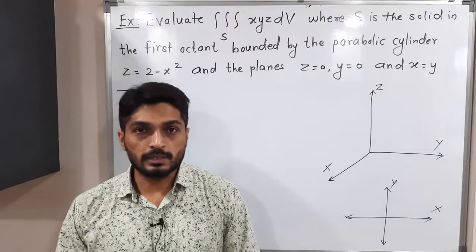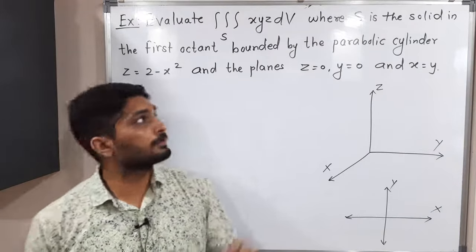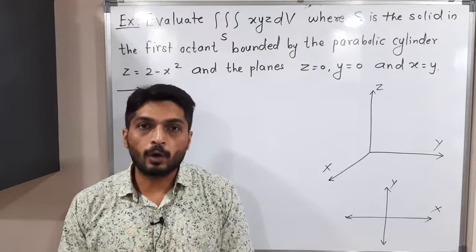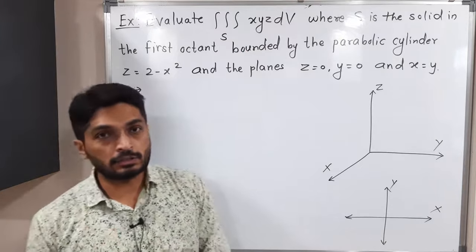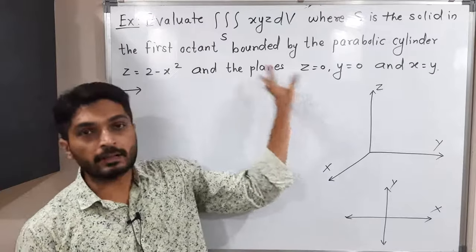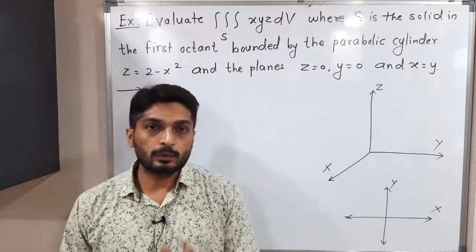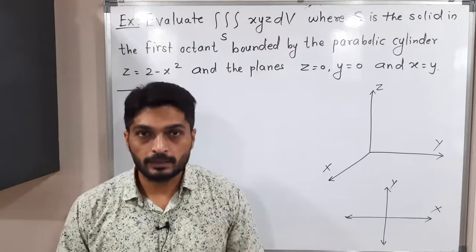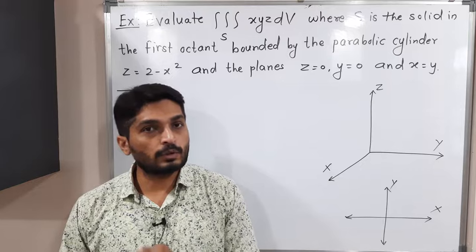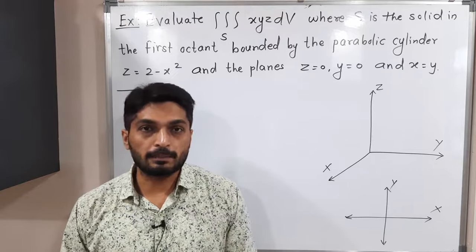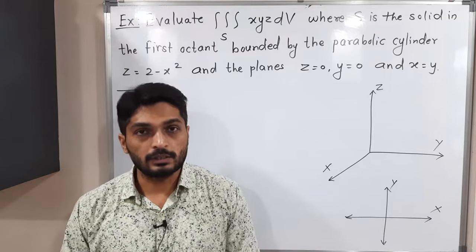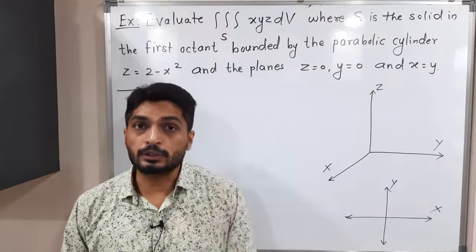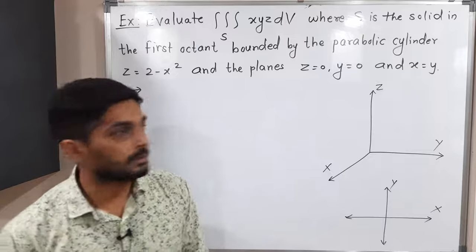Let us discuss this example. We have to find the value of this triple integral. The triple integral is defined on region S, described in a specific way. We have to find out that region S, find out the limits of the triple integration, and then solve it. This problem is not straightforward like previous examples. We have to draw the diagram and find out the actual region — then only we will have the limits. Let us start to solve this one.